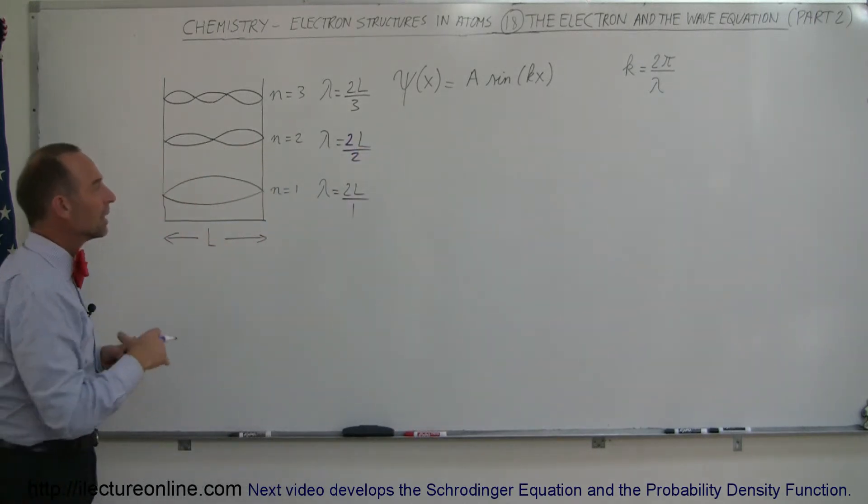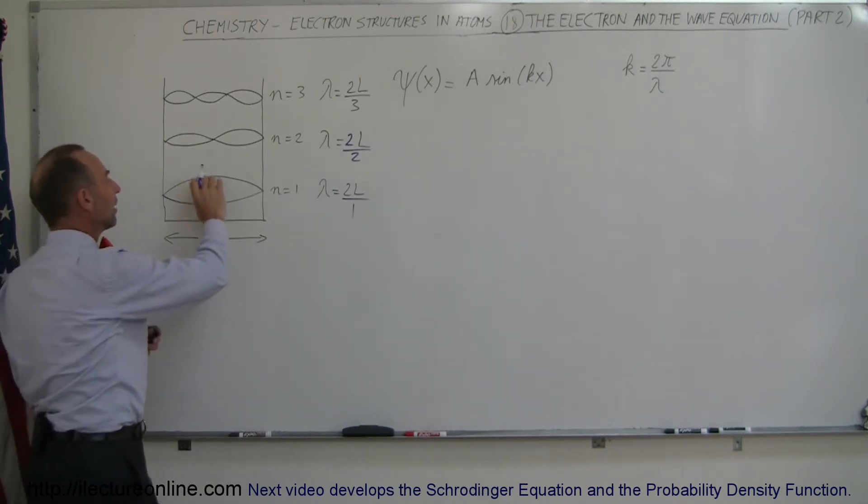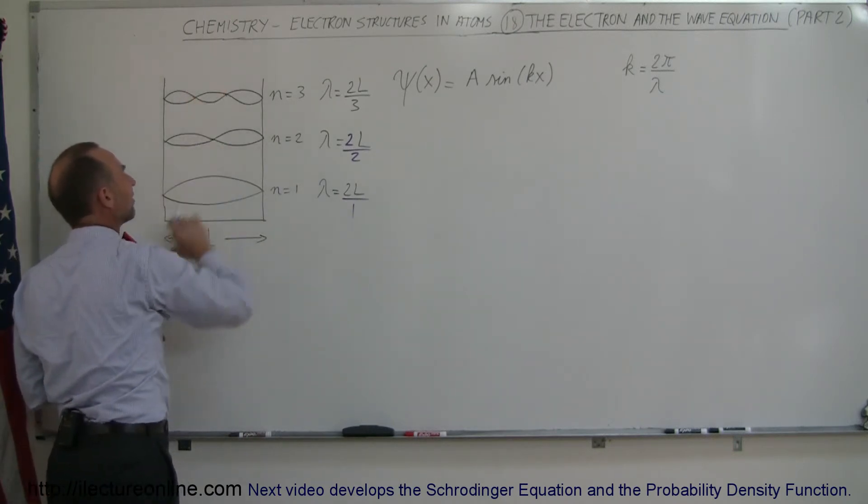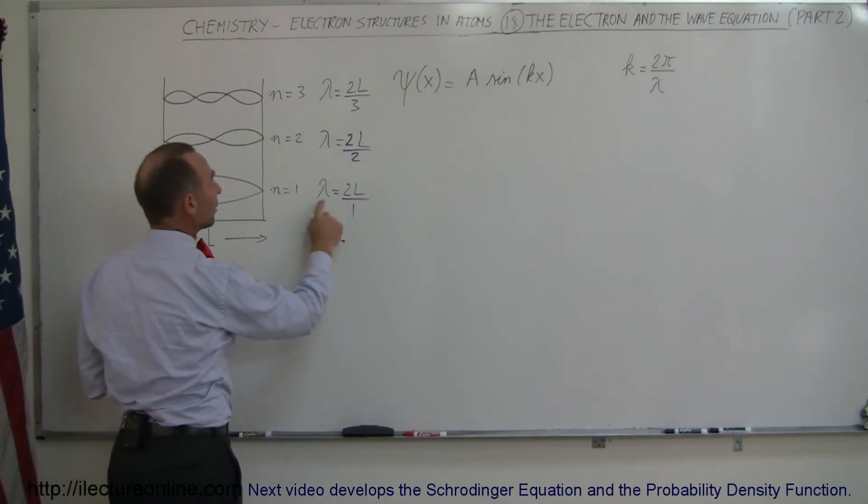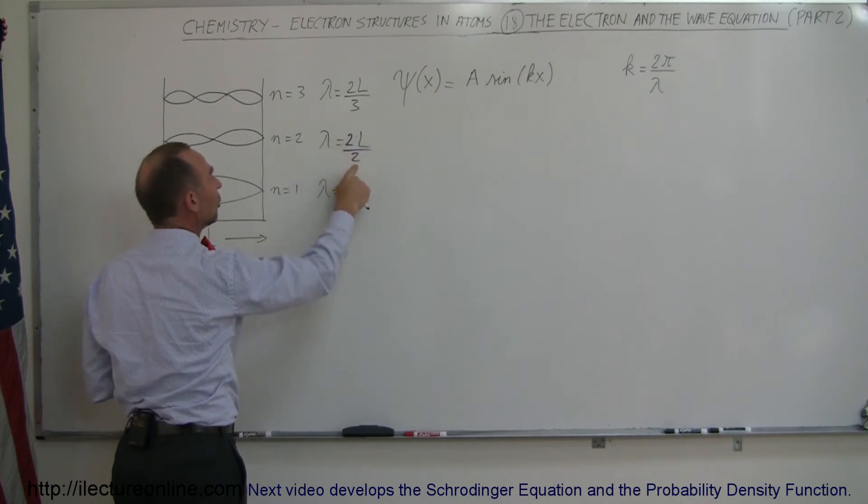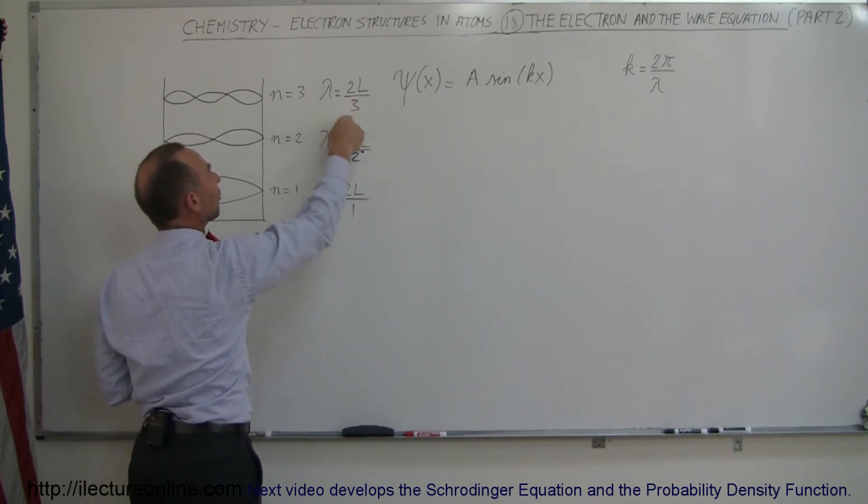Now notice how the wavelength of the electron in the various energy states inside a one-dimensional box only changes by the denominator. Here, the wavelength is 2L over 1. There, the wavelength is 2L over 2. There, lambda, the wavelength is 2L over 3, and so forth.